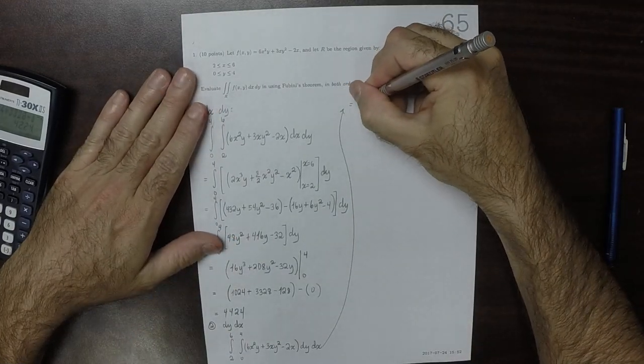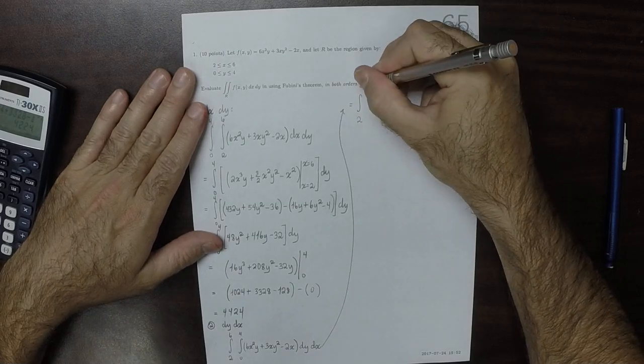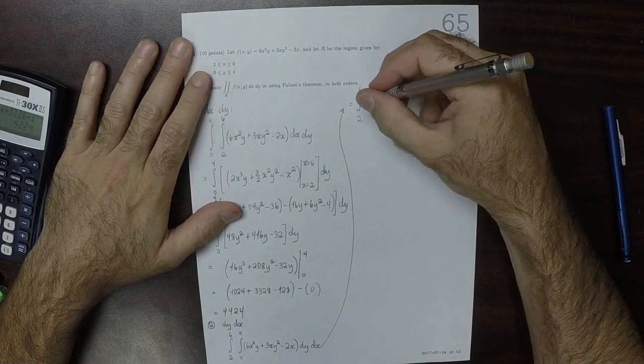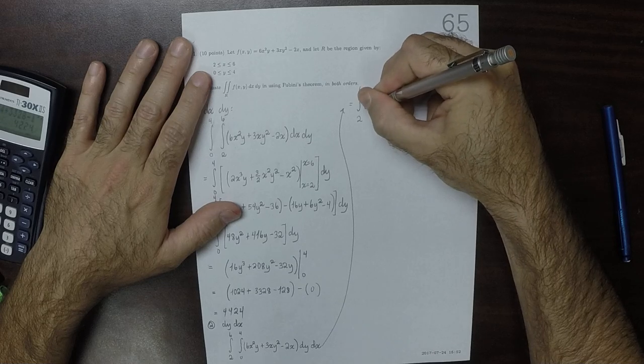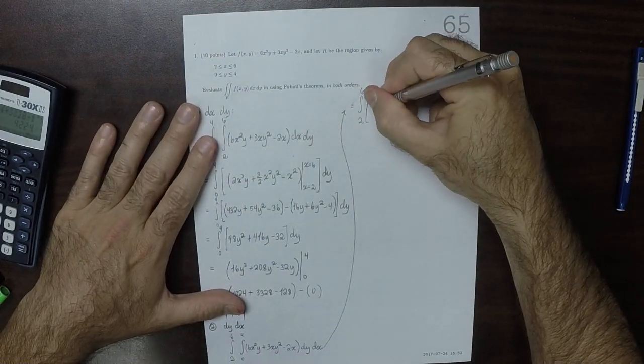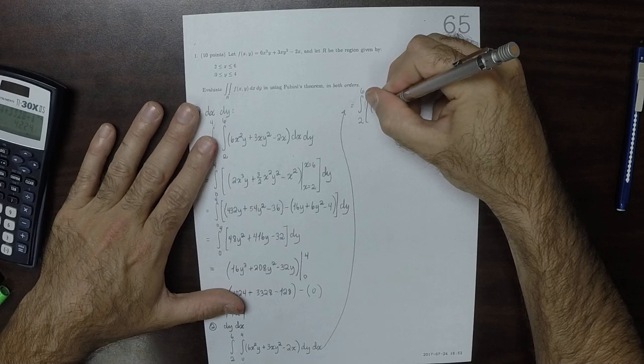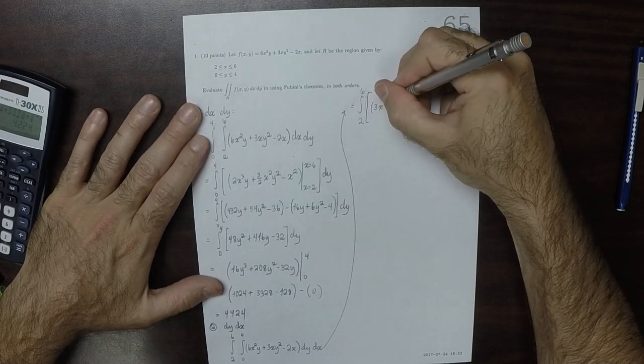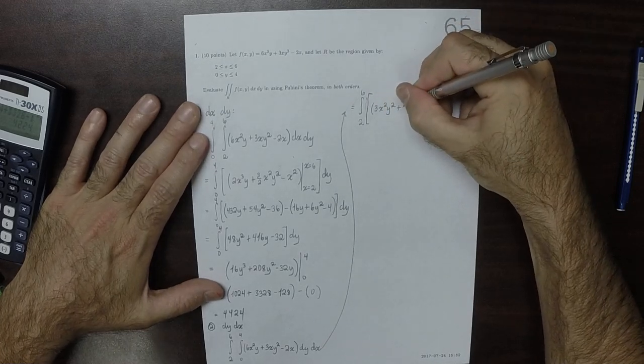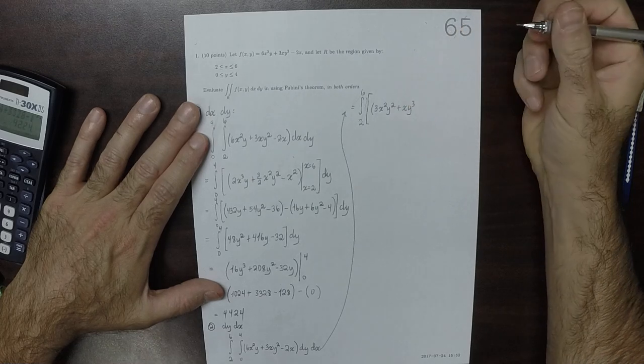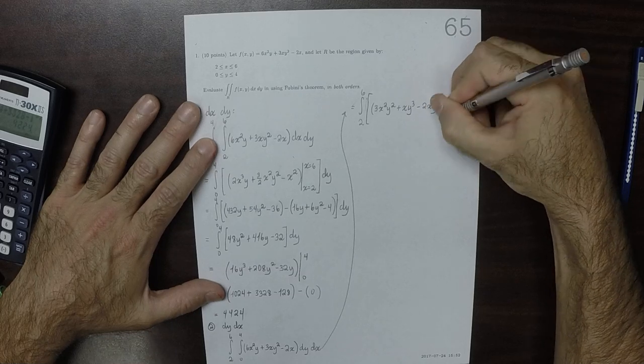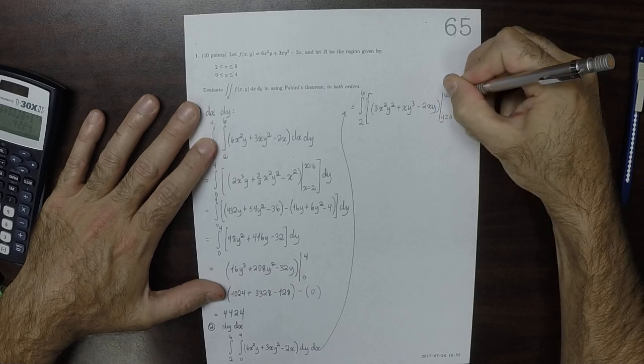That is integral 2 to 6, and then now the y-antiderivative of that would be 3x squared y squared for the first term, for the next term that would be plus x y cubed, minus 2xy. And now this is being evaluated from y is 0 to y is 4.